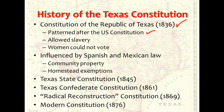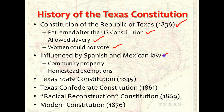It also, however, allowed slavery, extended citizenship to people other than Africans, the descendants of Africans, and Indians, and it did not allow women to vote. The Texas Constitution also drew on influences from Spanish and Mexican law. It adopted community property, which is shared ownership by married couples, and it also gave homestead exemptions and protections, and granted special relief to debtors.